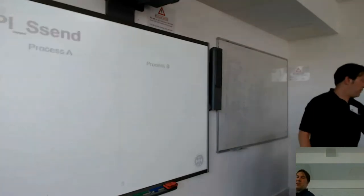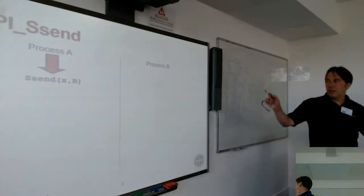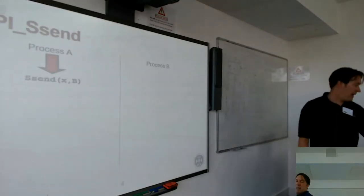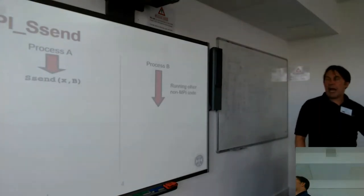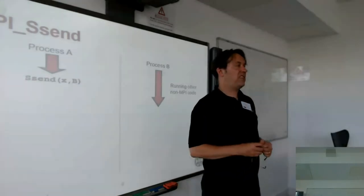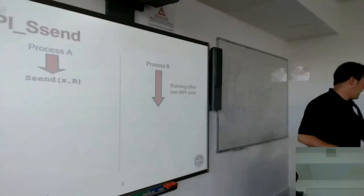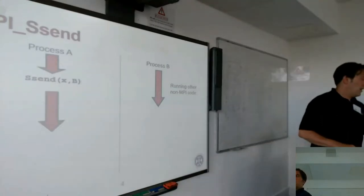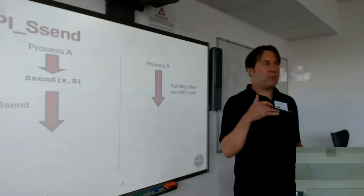Here's MPI Ssend: Process A calls MPI Ssend X to Process B, and Process B is running some other non-MPI code. What does Process A do? Because it's Ssend — it waits. Process A waits in the Ssend. This is a potential deadlock — you've made a phone call. With a correctly written MPI code, at some point Process B issues a receive.